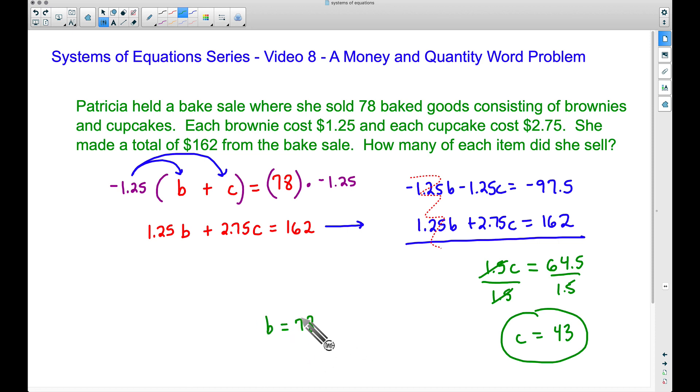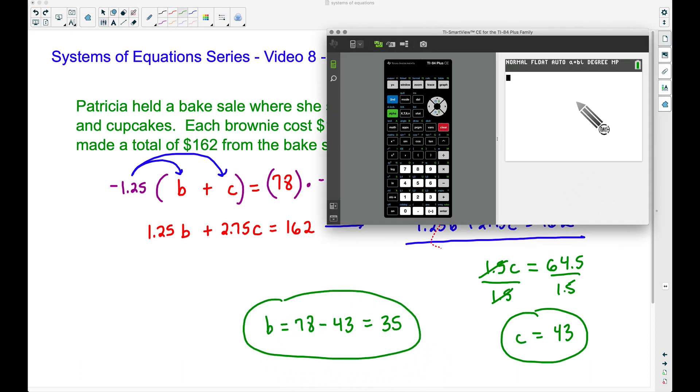The number of brownies is going to be 78 total baked goods minus the 43 cupcakes. This will give us a total of 35 brownies. We can quickly check our work, and I'm going to use a calculator here just to quickly check.